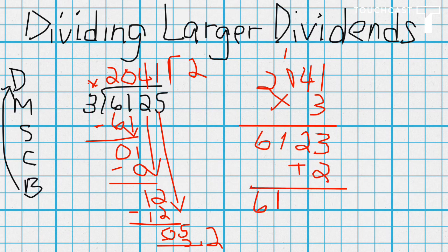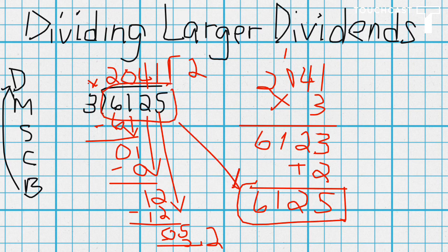And so we end up with 6,125. And this number should match this number, in which case it does, so we know that we have done it correctly. And that's it. Dividing larger dividends.